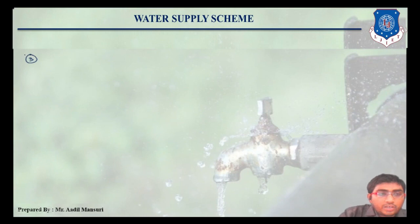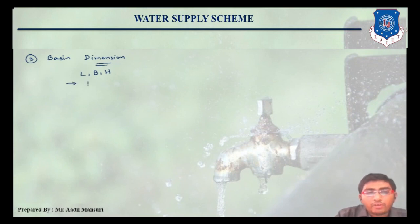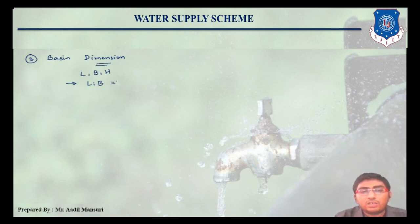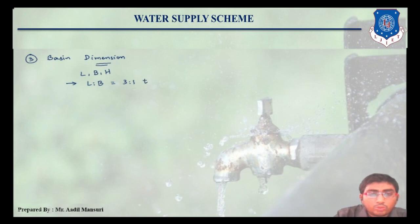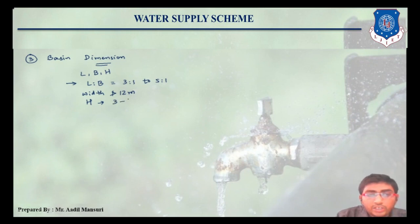The third aspect is basin dimensions. In case of dimensions, we have to find out length, width, and height. According to the design criteria, the L to B ratio is usually kept 3:1 to 5:1. The width is usually not greater than 12 meters, and the height of the tank is usually between 3 to 6 meters.